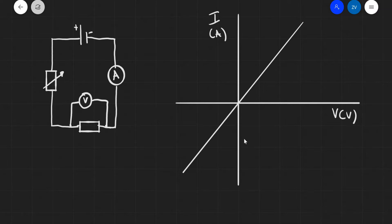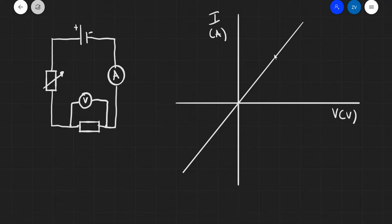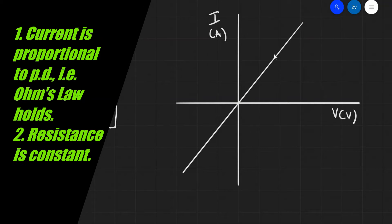Assuming we have used this circuit to measure the amount of current that goes through the resistor for various different amounts of potential difference, we have plotted the following graph. Notice that the graph is a straight line through the origin, which means the current is directly proportional to the potential difference. This means that Ohm's law is obeyed by the resistor.